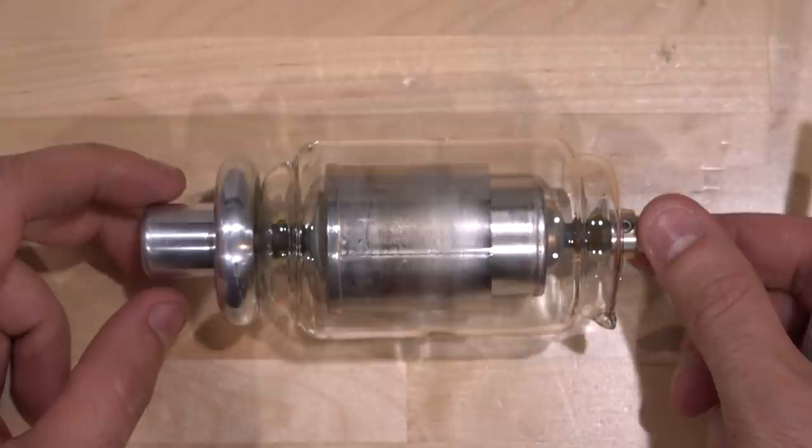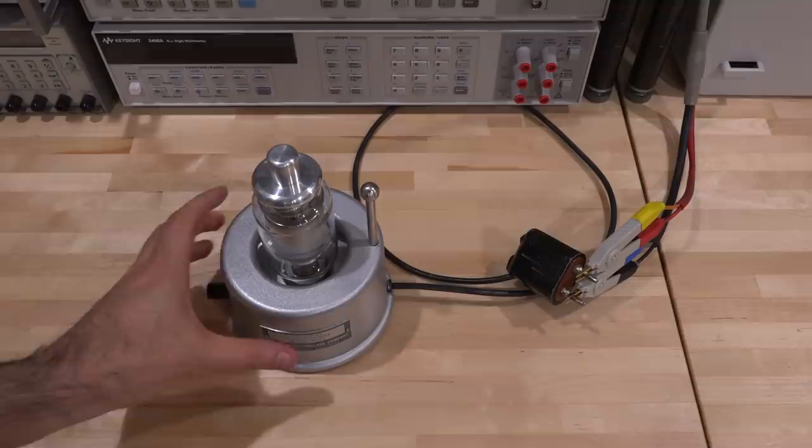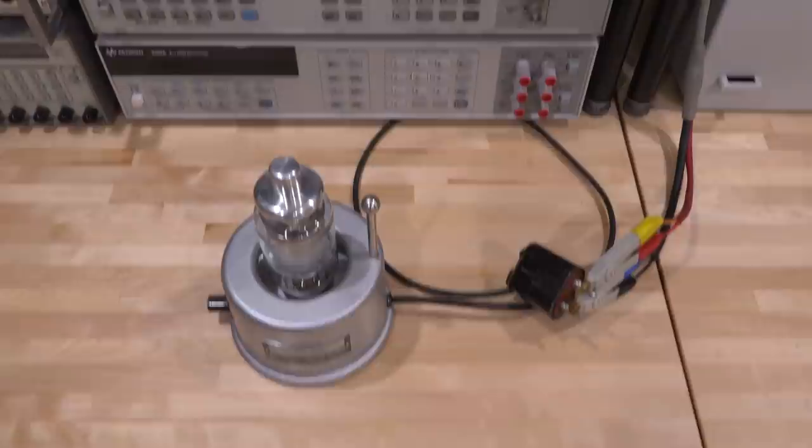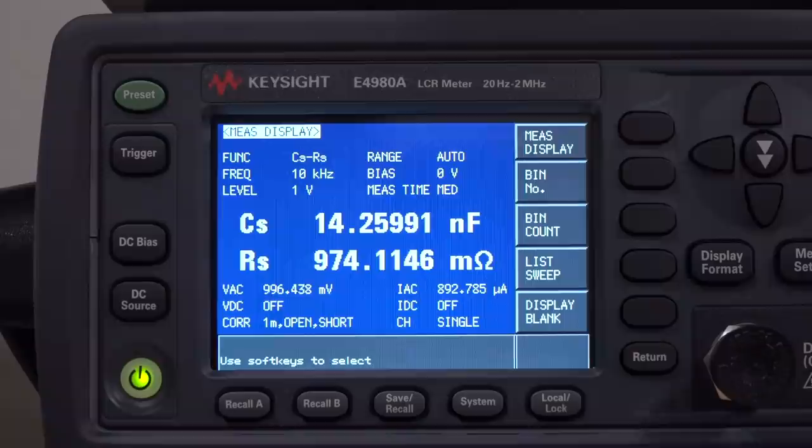Let's use our LCR meter and see if we can measure roughly the capacitance as we expect, both from the mica capacitors on the inside as well as the capacitance of the vacuum tube itself. I've connected the two terminals over there to my LCR meter, the Keysight E4980A, and we can take a look at the capacitance.